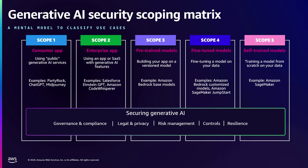The first two scopes are focused on buying a service — standard off-the-shelf stuff. Then we move into actually wanting to build your own application. Using something like Bedrock, you can start what we call Scope 3, using a pre-trained model. You're taking something off-the-shelf, using our hosting service, and building your application in order to run and generate content.